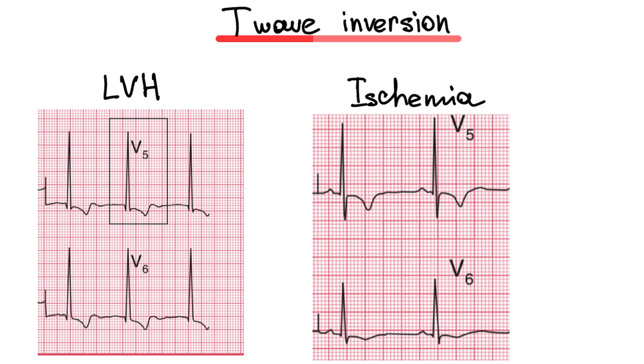T wave inversion. It can be symmetric or asymmetric. Symmetric T wave inversion we can see with myocardial ischemia. Asymmetric T wave inversion we can see with left ventricular hypertrophy.